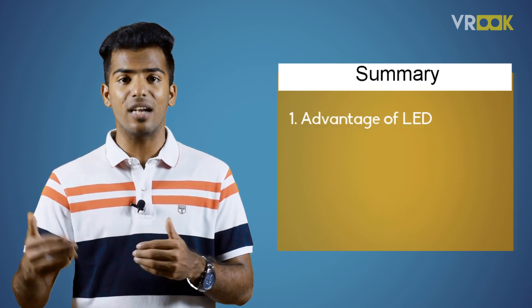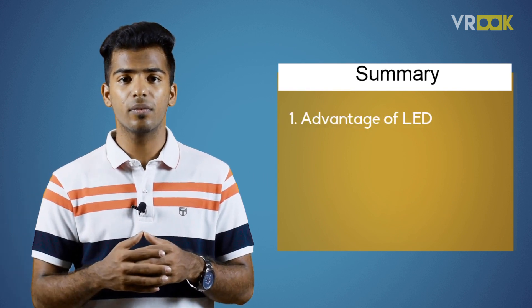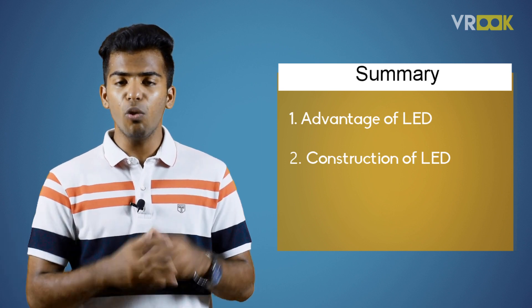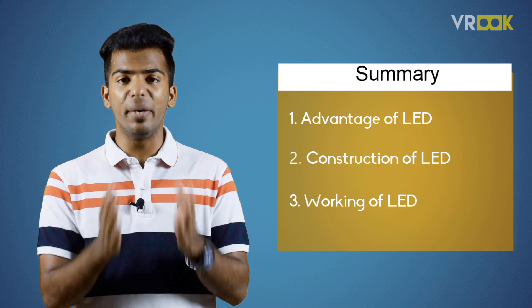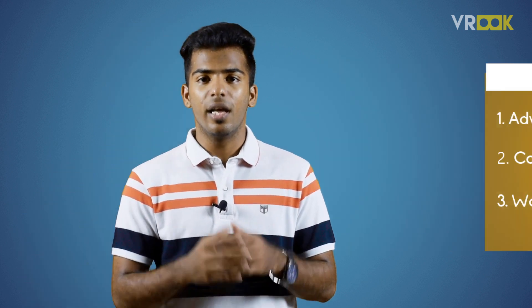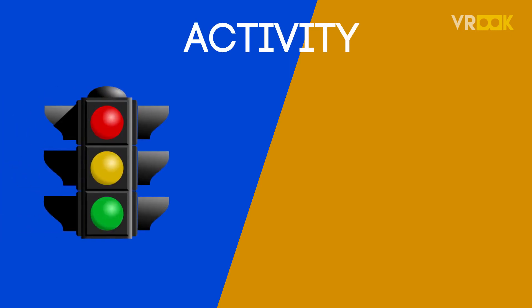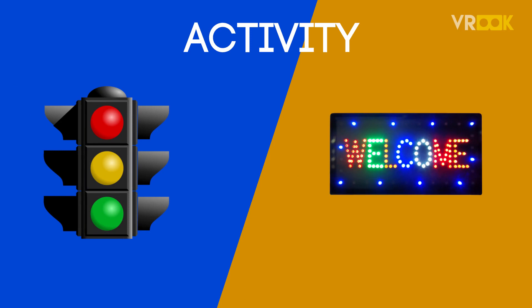To sum up, we learned about the advantages of LED over incandescent and CFL, the construction of LEDs using special semiconductors, and the working of LEDs where it emits photons that radiate light. In the next video we will learn about another type of diode called the photodiode. Before you go, here's a small activity: make a mini traffic light or a light display board with 5 to 10 LEDs and a resistor circuit — through this you will get to know about LEDs even better.